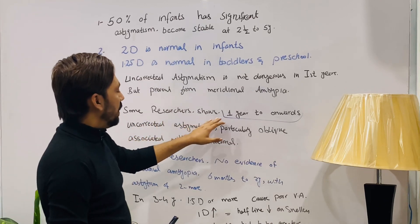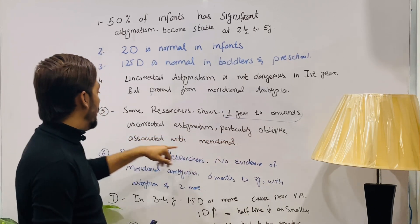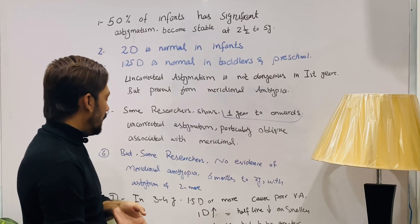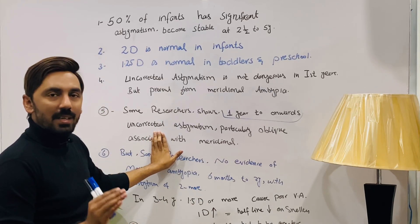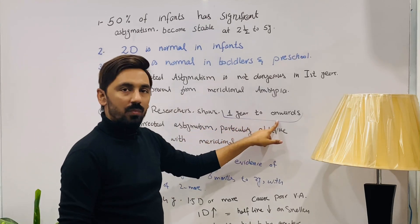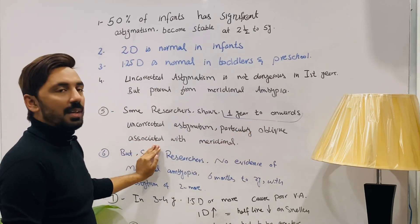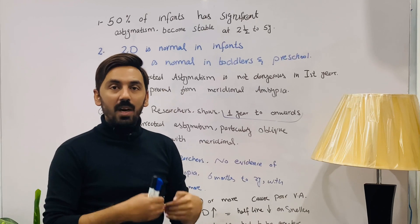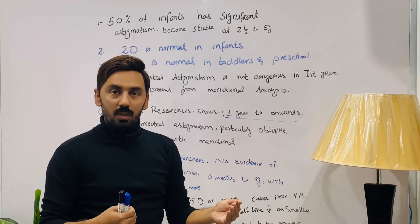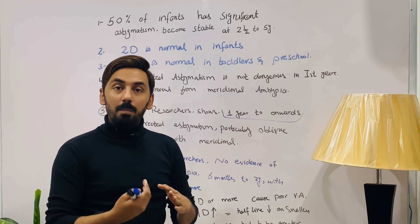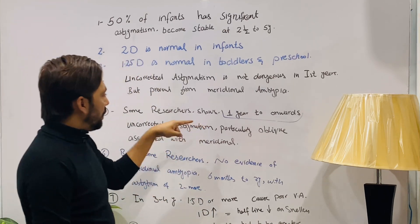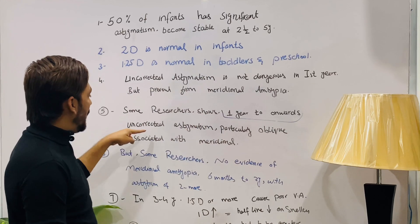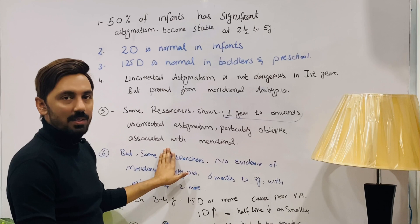Some researchers show that from one year onwards, uncorrected astigmatism — particularly oblique astigmatism — is associated with meridional amblyopia. So from age one year onward, if astigmatism is uncorrected, particularly oblique astigmatism, it can cause meridional amblyopia. We must protect the child from both astigmatism and meridional amblyopia.